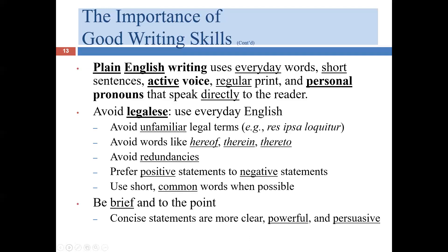Let's look at the features of plain English writing. We want to use everyday words when we can — these are going to be short words that people use routinely in their conversations. For example, instead of saying 'minute,' say 'small' or 'little.' Instead of 'automobile,' say 'car.' These words are relatively short and are the types of words most people have in their everyday spoken vocabulary.